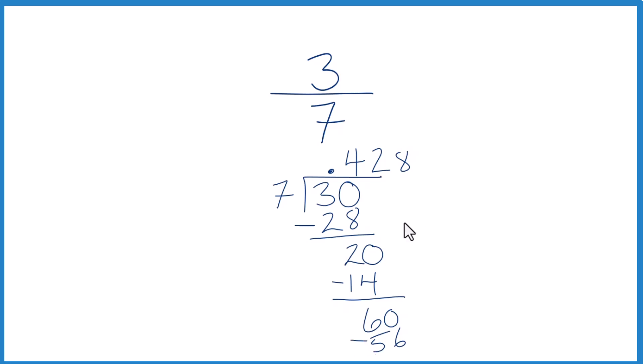So we can keep going on here for some time. In fact, we would get 8, 5, 7, 1. And then it would start repeating. This part would start repeating again. So we could just put a bar over this here.